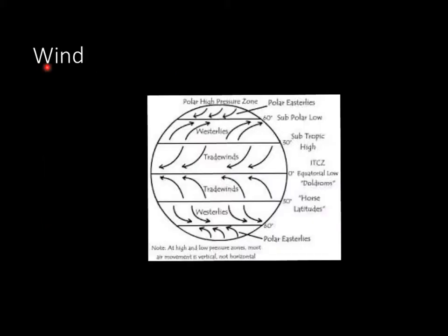Let's move on to wind. Wind patterns is one of the more confusing topics in environmental science, because there are so many different ways wind moves. We'll go over it briefly here, but your book is a good resource if you need more depth. Simply put, wind flows around the globe with polar easterlies on top, then the westerlies, trade winds, the equator, more trade winds, the westerlies again, and the polar easterlies. Around the equator, there is something known as Hadley cells, which is a term you should know as well.